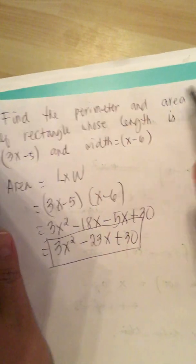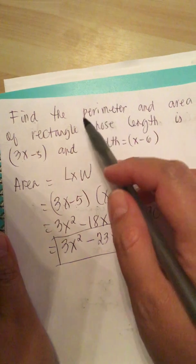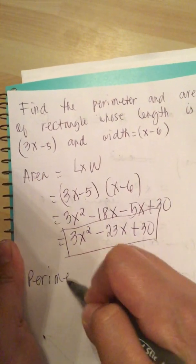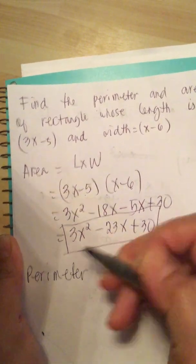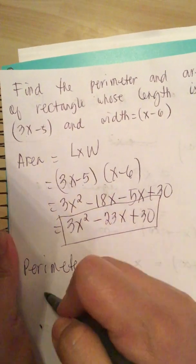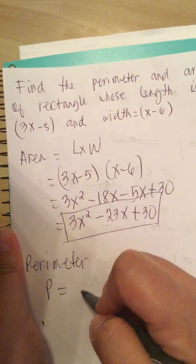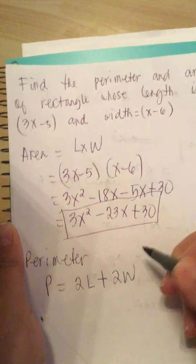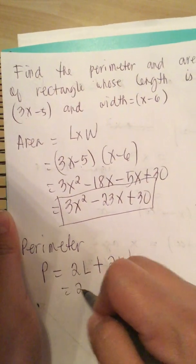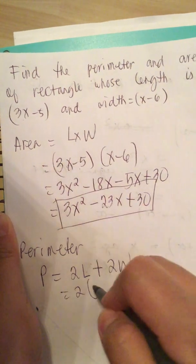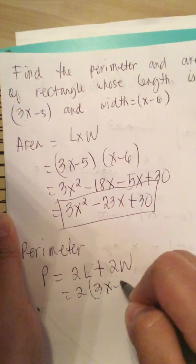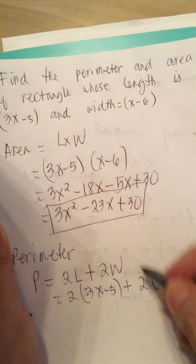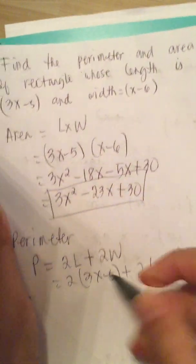Now they want to know the perimeter. The perimeter P is equal to 2L plus 2W. So we have 2 times the length 3x minus 5, plus 2 times the width x minus 6.